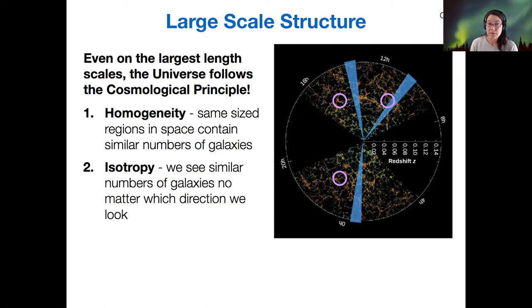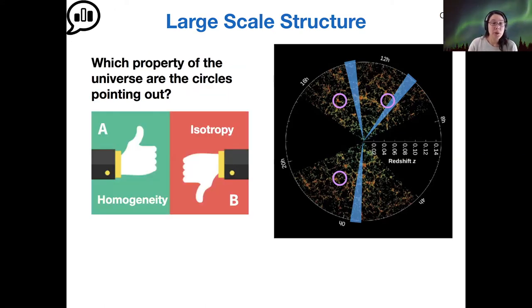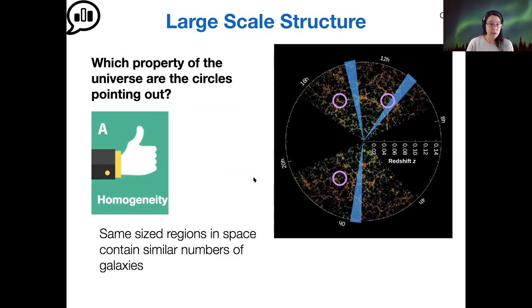On these largest length scales, the universe does in fact look homogeneous and isotropic, but only on sufficiently large scales. Which property are these circles trying to point out? I see far and away the most votes for A. Yes, those are homogeneity—similar size regions in space that contain similar numbers of galaxies.